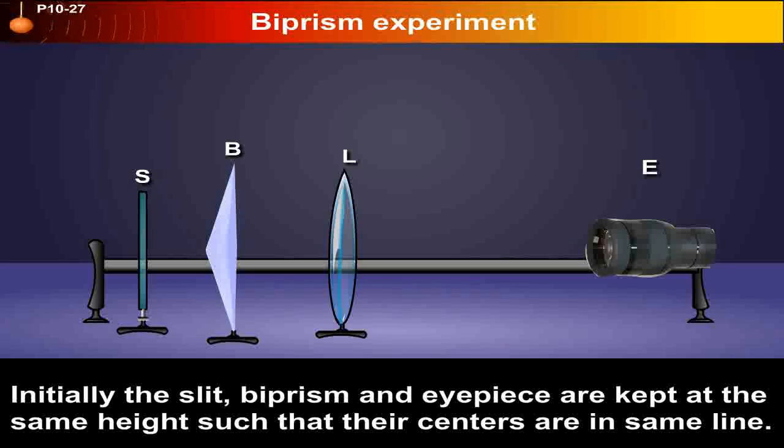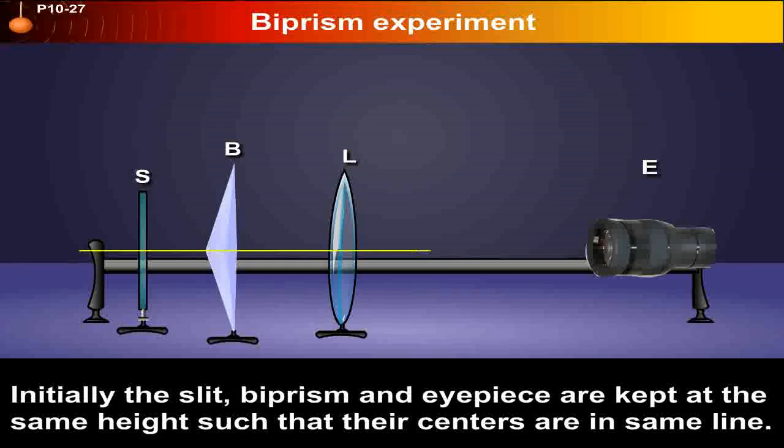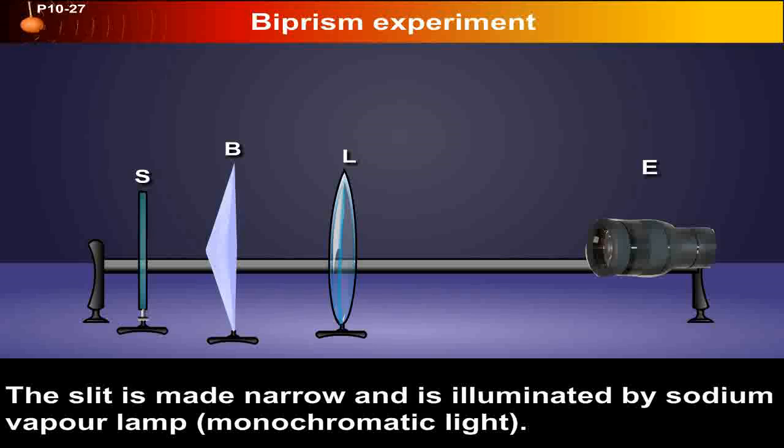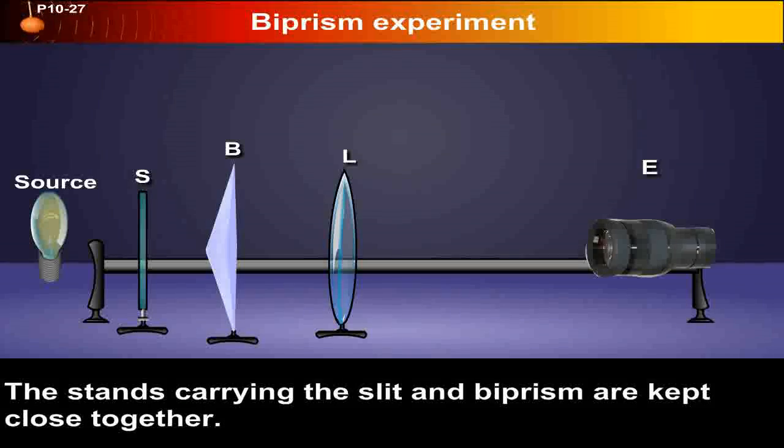Initially, the slit, bi-prism, and eyepiece are kept at the same height such that their centers are in the same line. The slit is made narrow and is illuminated by a sodium vapor lamp, that is, monochromatic light.